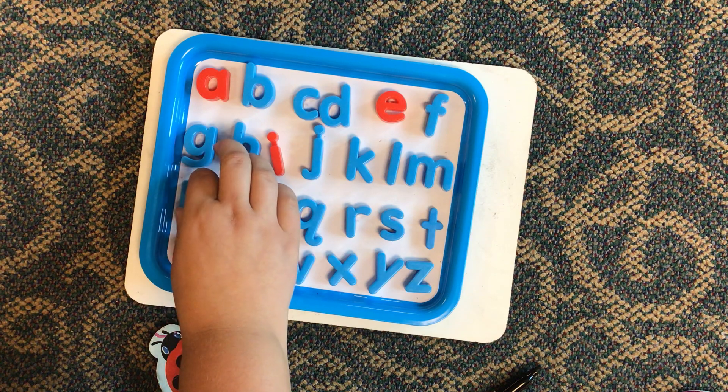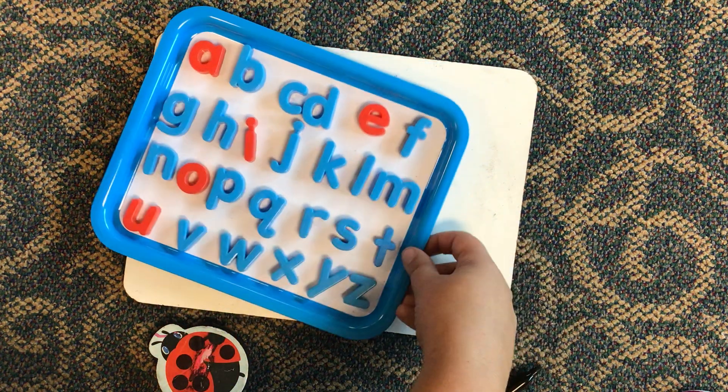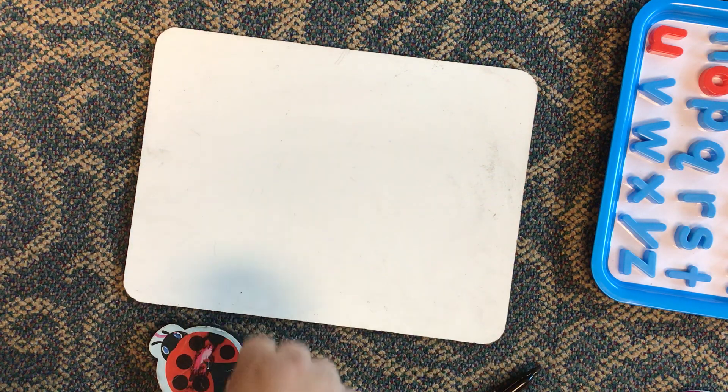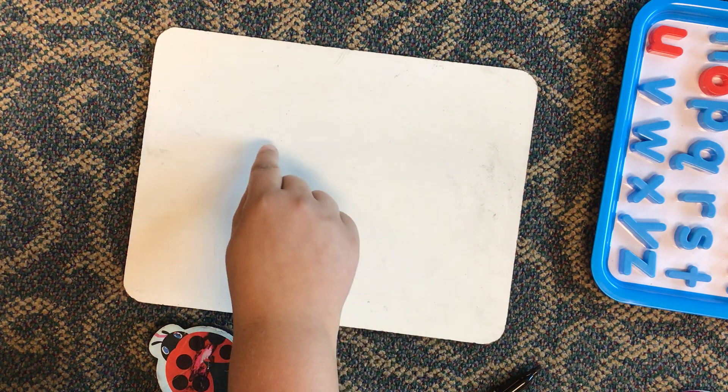All right, friends. The next way we're going to practice this sight word is our table write. And remember, this is using our magic pointer finger to write the word can. Let's do it.